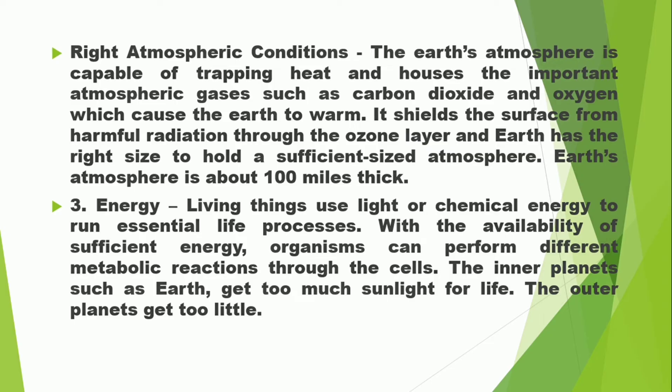Earth's atmosphere is about 100 miles thick. Next is energy. Living things use light or chemical energy to run essential life processes. With the availability of sufficient energy, organisms can perform different metabolic reactions through their cells. The inner planets, such as Earth, get too much sunlight for life, while the outer planets get too little.